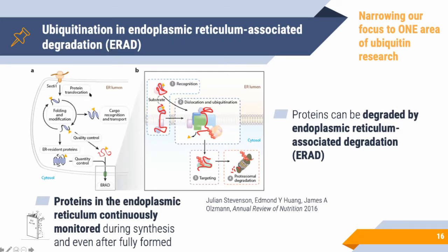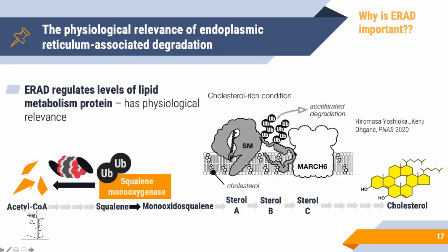A subset of ubiquitin research is endoplasmic reticulum-associated degradation, or ERAD. In the ER, if proteins aren't made properly, they need to be removed — they get ubiquitinated and degraded via ERAD. This also happens for fully mature, native proteins when they're no longer needed. One example is squalene monooxygenase, which gets ubiquitinated under high cholesterol conditions and removed.